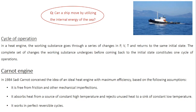A heat engine always works in cycles — it is a cyclic process. At the end of the process, the system comes back to the same initial state. The working substance undergoes a series of changes in pressure, volume, and temperature, but finally returns to its initial state. The complete set of changes the working substance undergoes before returning to the initial state constitutes one cycle of operation.